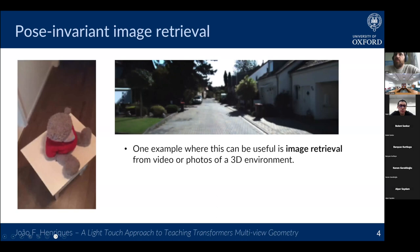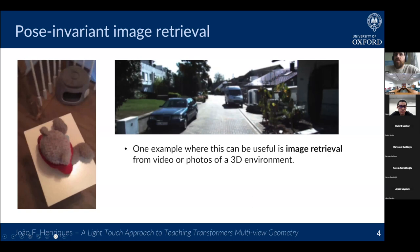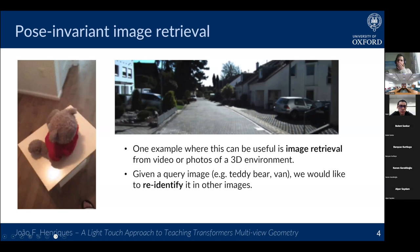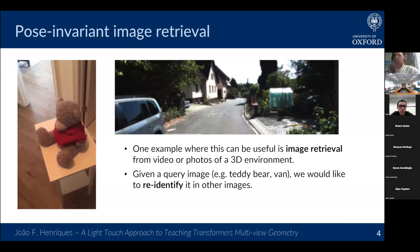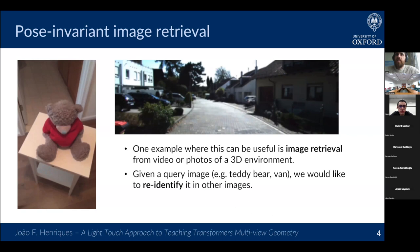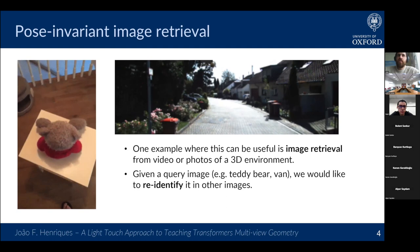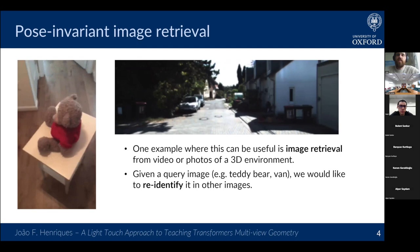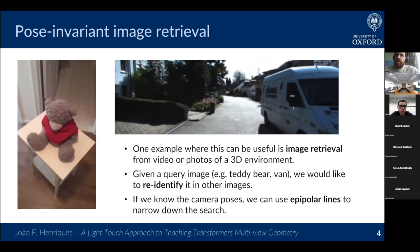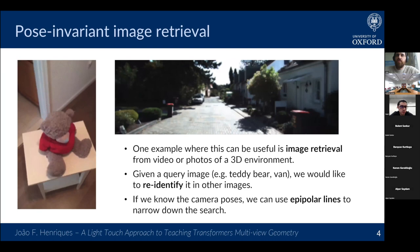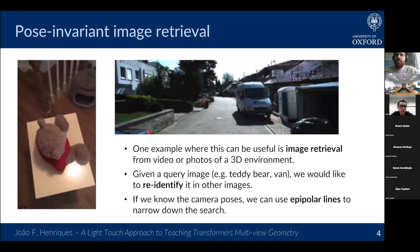The inspiration was: are these rigid geometric laws not useful at all? It seems like you should still get mileage out of them — we just have to use them in another way. We wanted to keep the VIT's flexibility but add 3D priors for extra robustness. One example where this is useful is image retrieval of videos or photos from a 3D environment: given a query image of, say, a teddy bear or a particular van, we'd like to re-identify it across images from different angles.